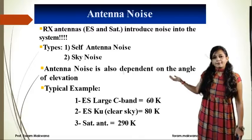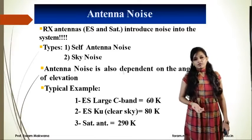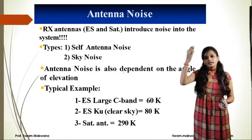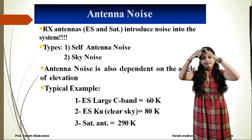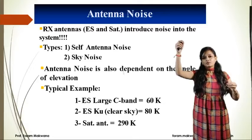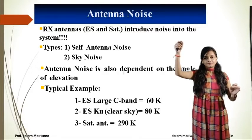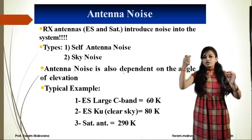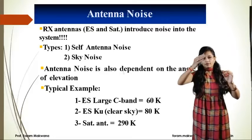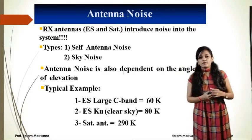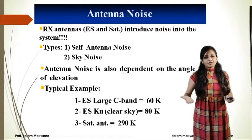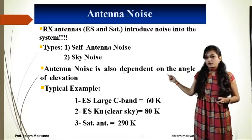Antenna noise is dependent on the angle of elevation. The angle of elevation is a vertical angle — the angle between the satellite and, with reference to the centre of the earth, the vertical projection of the satellite onto the surface of the earth. This angle with reference to the centre of the earth is known as the elevation angle. This noise is dependent on the elevation angle.